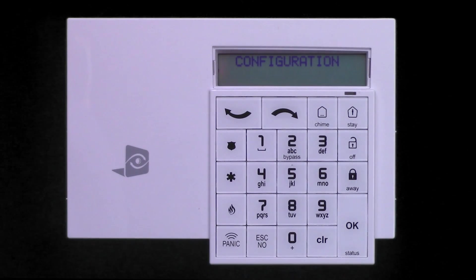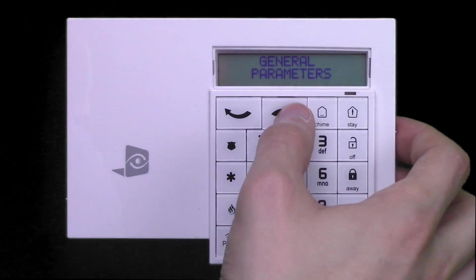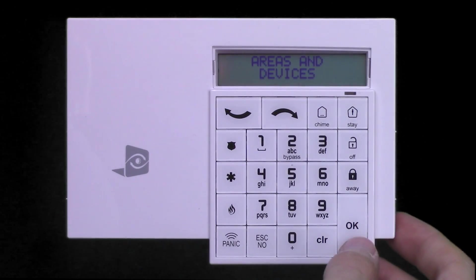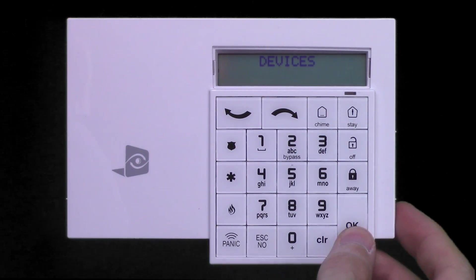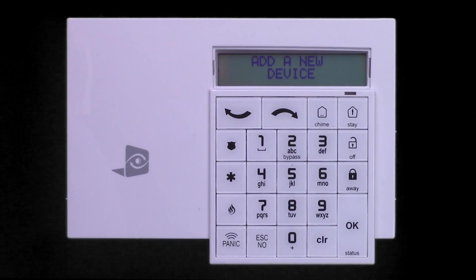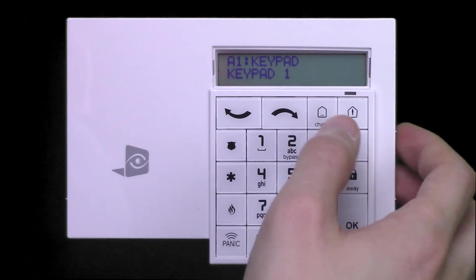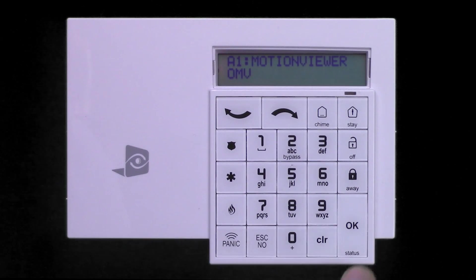To adjust the name of the device, navigate to the Configuration menu, then to Areas and Devices. Select Devices, then Device Configuration. Use the arrow keys to locate the Motion Viewer. Press the OK button on the Motion Viewer you'd like to adjust. Use the arrow key to select Changing Name Motion Viewer and press OK.